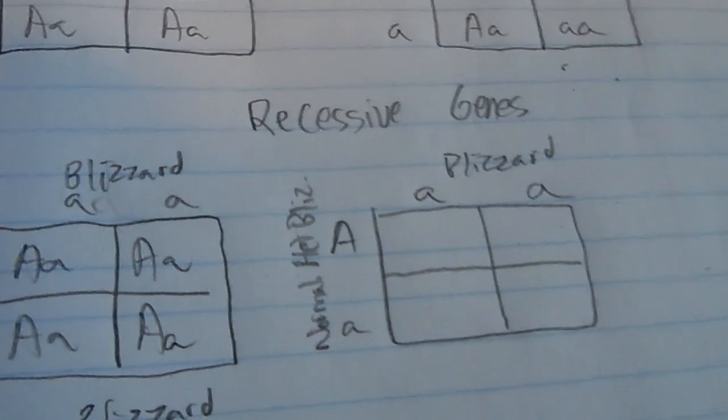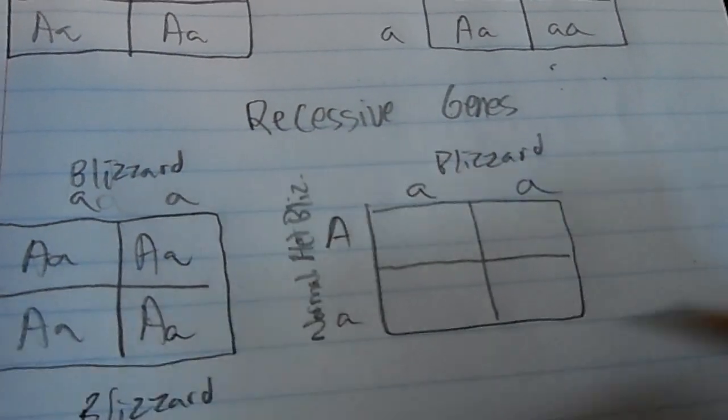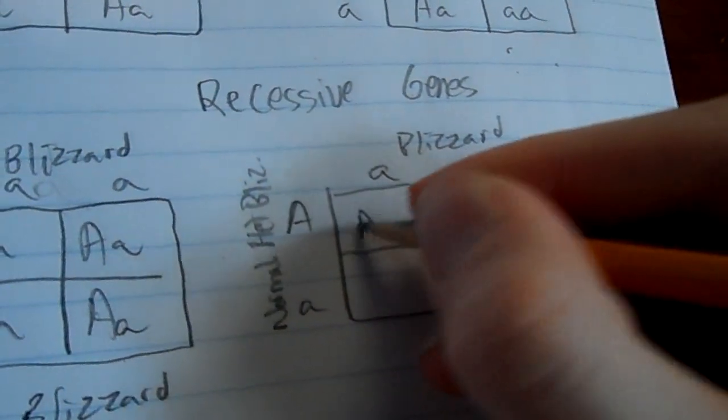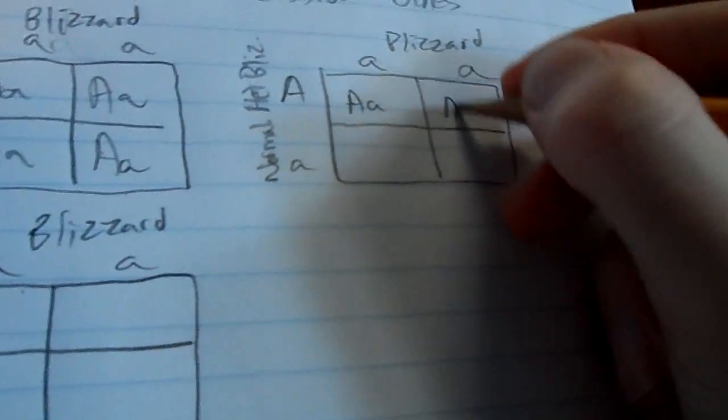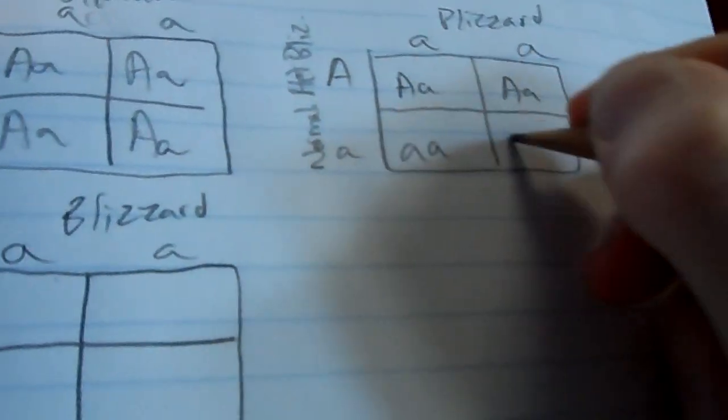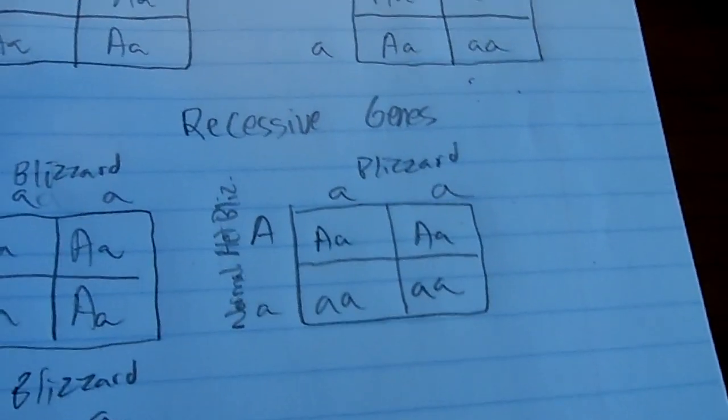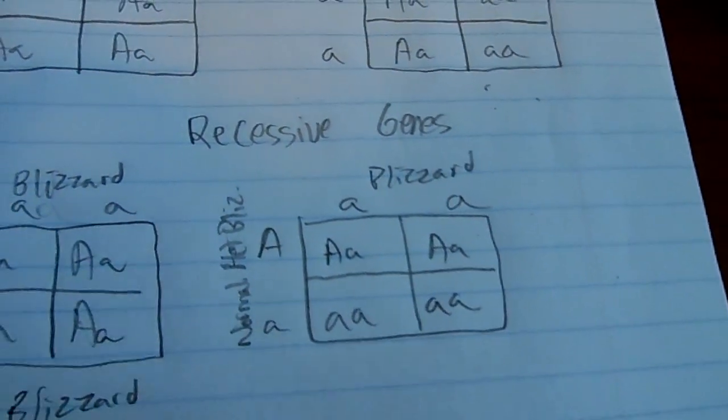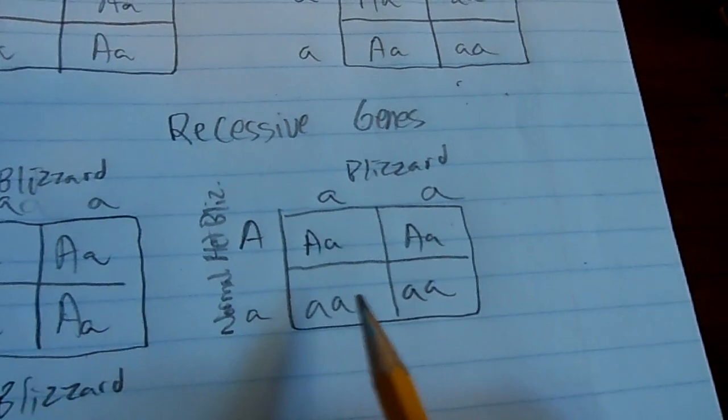Now over here, you've got blizzard on top and normal het blizzard on the side. So when I do this, you'll get 50% normal het blizzard and 50% blizzards.